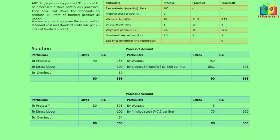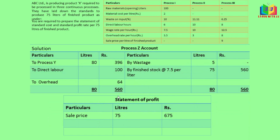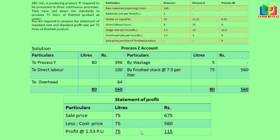For the statement of standard cost, the cost of 75 liters is 560 at 7.5 per liter. To find standard profit: selling price is 75 liters into 9 rupees equals 675. Subtracting the cost of 560 gives a profit of 115 for 75 liters. Profit per liter is 115 divided by 75, which gives 1.53 per liter. This completes the statement of profit.